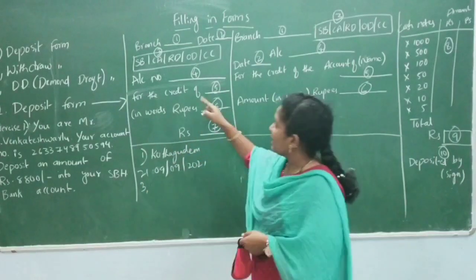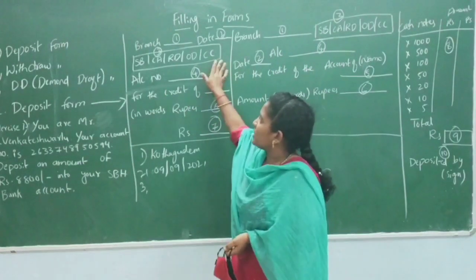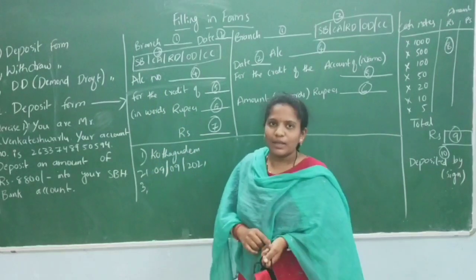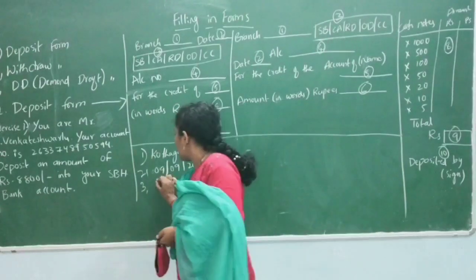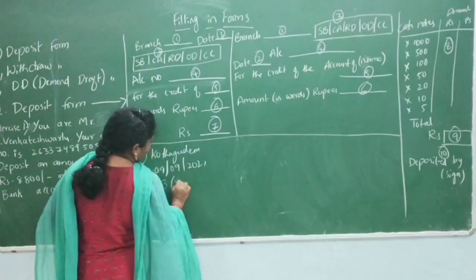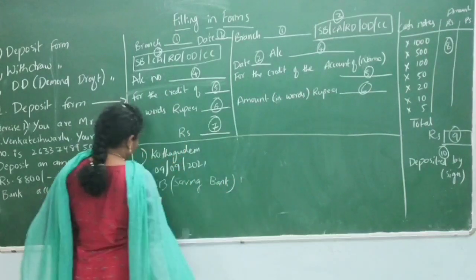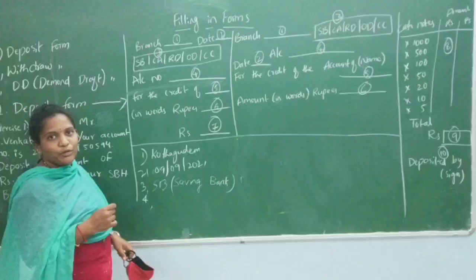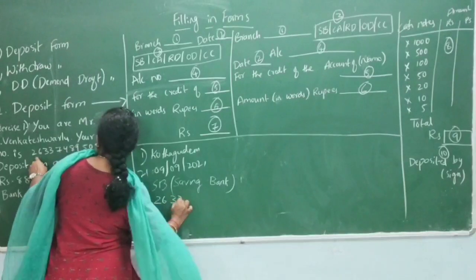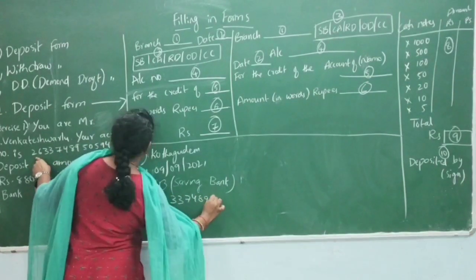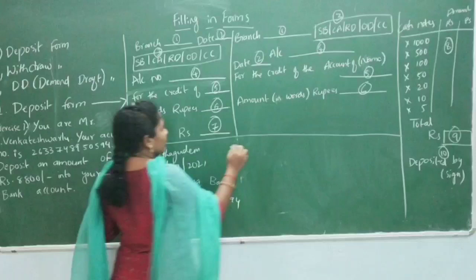Here we write the IFSC code or similar bank codes. For example: 7, 5, 6, 8, 5, 0, 5, 9, 4. These numbers identify the bank and branch.